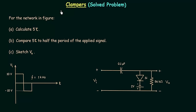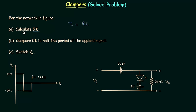In this lecture I will solve one problem based on clampers and try to cover everything we have studied till now in clampers. For the network in the figure, calculate 5 tau. Tau is the time constant and it is equal to RC. So we have to calculate 5 tau in Part A.